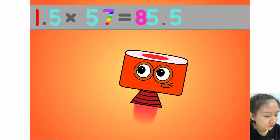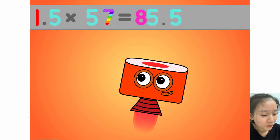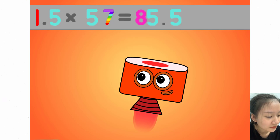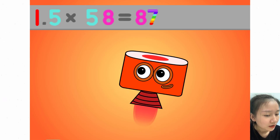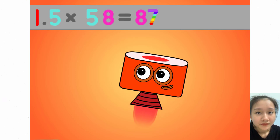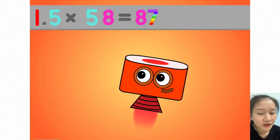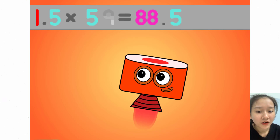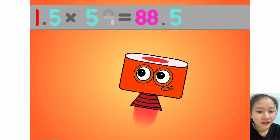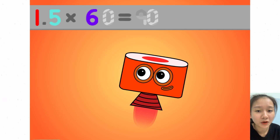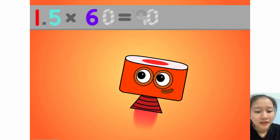1.5 times 57 equals 85.5. 1.5 times 58 equals 87. 1.5 times 59 equals 88.5. 1.5 times 60 equals 90.